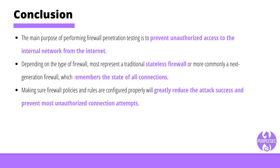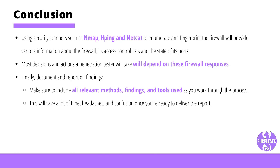The main purpose of performing firewall penetration testing is to prevent unauthorized access to the internal network from the internet. Depending on the type of firewall — most representing either a traditional stateless firewall or a next-generation firewall that remembers the state of all connections — the success of any firewall penetration test depends on multiple factors. Making sure firewall policies and rules are configured properly will greatly reduce attack success. Using security scanners such as Nmap, HPing, and Netcat to enumerate and fingerprint the firewall will provide information about the firewall, its access control lists, and the state of its ports. Last but not least, documenting everything is just as important as the test itself — include all relevant findings and tools as you work through the process instead of waiting until the end, to save time and avoid confusion when delivering the report.